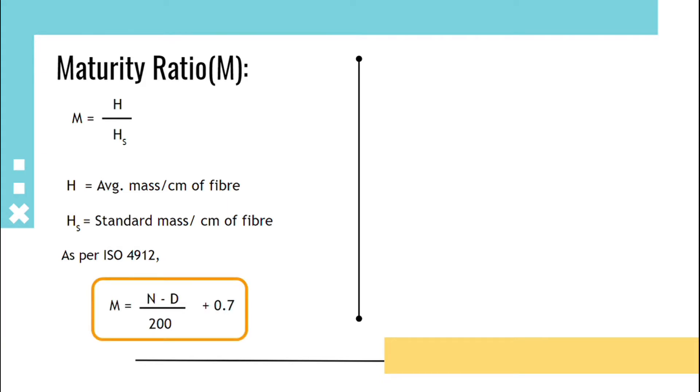Here N is percentage of mature fibers and D is percentage of dead fibers. Maturity count is N minus D, where N is percentage. M less than 0.8 indicates immature fibers.